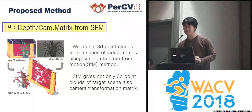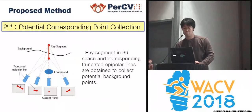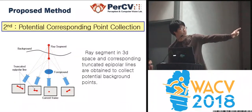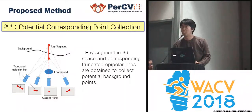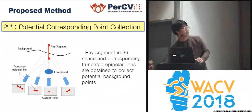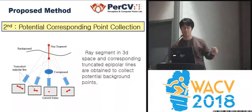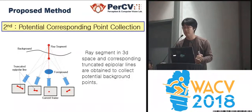When we take the video, it's possible to calculate the 3D distance between the camera and the target background object. Secondly, we collect the potential corresponding background point. In this figure, there's a current frame where we cannot see the background because of a blocking foreground object — the one we want to remove. We collect potential information from other view frames by assigning a ray segment that intersects the background, then projecting this ray segment to each viewpoint frame, collecting a truncated epipolar line. All points on this epipolar line are potential background points — we collect potential background color information from all these epipolar lines.